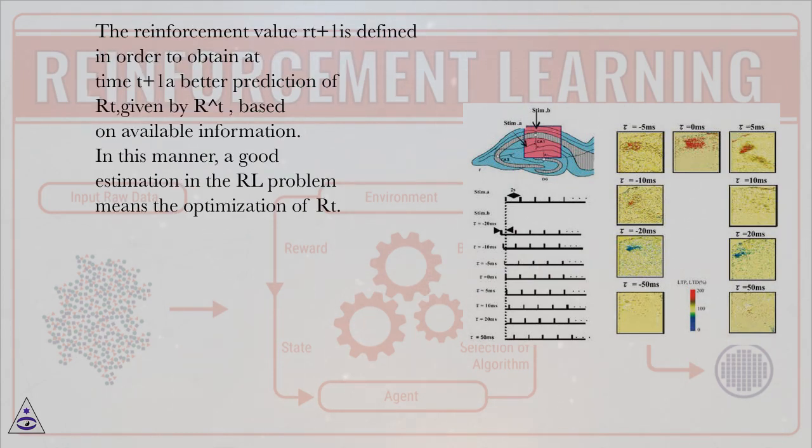The reinforcement value R_{t+1} is defined in order to obtain at time t+1 a better prediction of R_t, given by R to the power of T, based on available information. In this manner, a good estimation in the RL problem means the optimization of R_t.